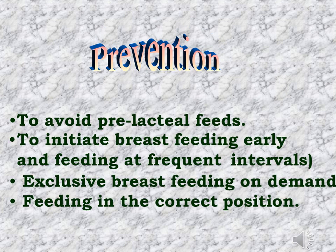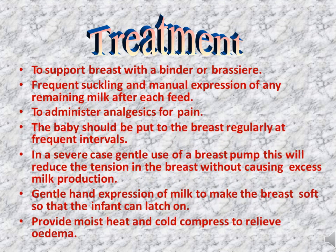How breast engorgement can be prevented: First, avoid pre-lacteal feeds. Pre-lacteal feeds means any food except mother's milk provided to a newborn before initiating breastfeeding, and it is a major barrier to exclusive feeding. Initiate breastfeeding early and feed at frequent intervals with exclusive breastfeeding on demand. Feeding in the correct position is the best method to prevent breast engorgement. Wear the proper size brassiere and apply a binder. Frequent suckling and manual expression of any remaining milk after each feed — the mother must squeeze the breast after each feed.